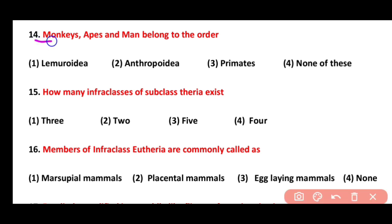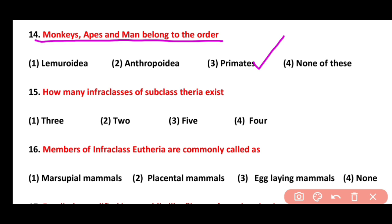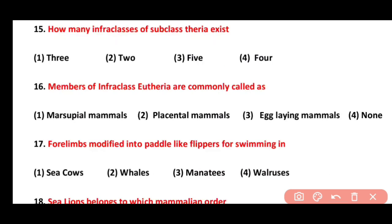Question 14. Monkeys, apes, and men belong to the order: Lemuridae, Anthropoidea, Primates, or None of these. Correct answer is option 3. Men and monkeys belong to the order Primates.